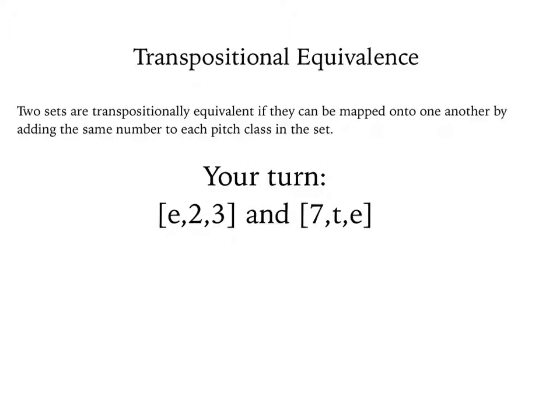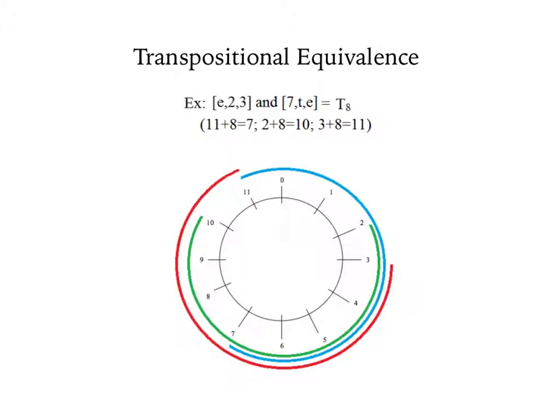Now you try. These two pitch class sets are transpositionally equivalent. Can you find the transpositional operator? Pause your video now to try it for yourself. The two set classes are equivalent by T8. We know this by adding 1 to 8 to get 7, 2 to 8 to get 10, and 3 to 8 to get 11. You may also find it helpful to view this on the clock face, to see each pitch moving the same amount around the clock face.